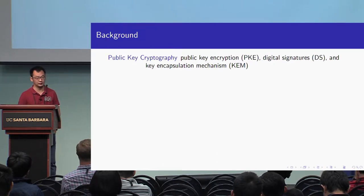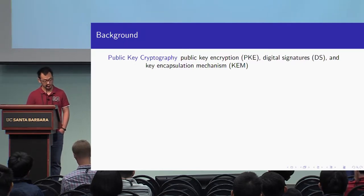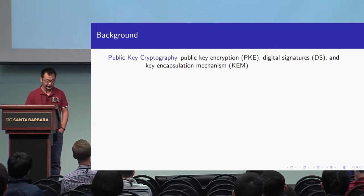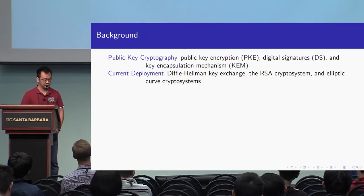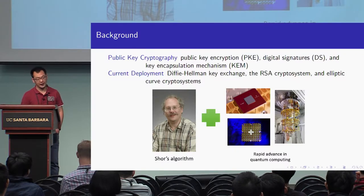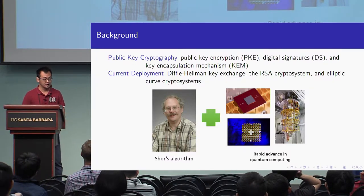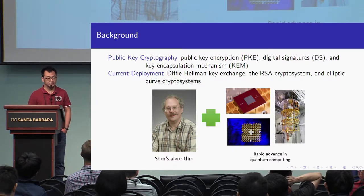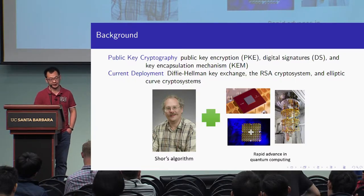First, I will introduce the basic background. As we all know, public key cryptography contains three primitives: public key encryption, digital signature, and key encapsulation mechanism. The most current deployments are Diffie-Hellman key exchange, RSA cryptosystem, and Elliptic-Curve cryptosystem. However, in 1994, Peter Shor provided a brilliant algorithm to attack all Diffie-Hellman systems and factoring in polynomial time on quantum computers. So with the rapid development of quantum computers, it is very necessary to provide a new public key cryptosystem to prevent practical attacks.